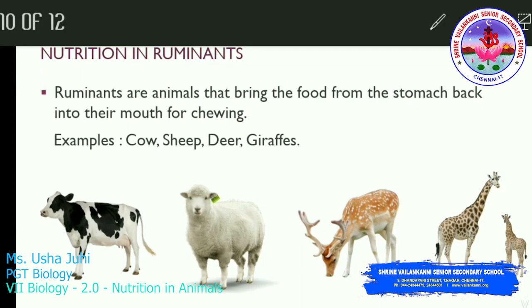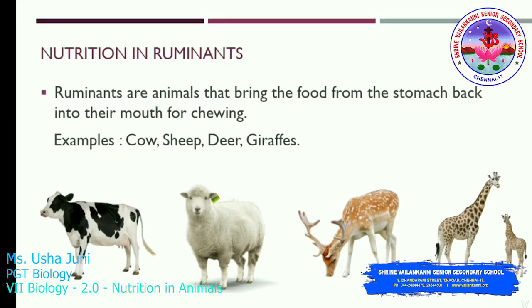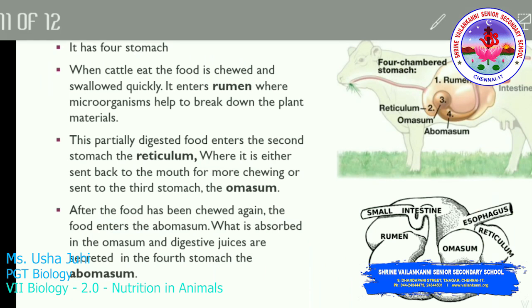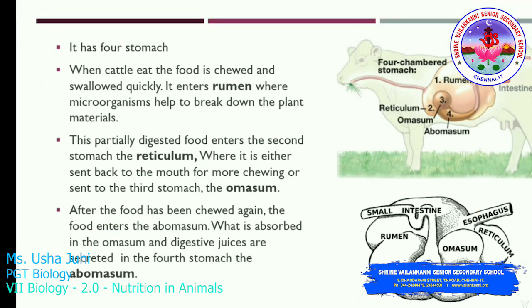Ruminants are animals that bring food from the stomach back into their mouth for chewing. Examples include cow, sheep, deer, and giraffes. Ruminants have four stomachs. When cattle eat, the food is chewed and swallowed quickly into the rumen, where microorganisms help break down plant materials.